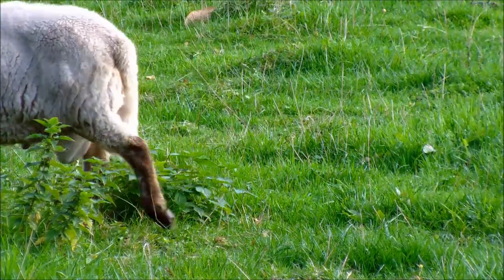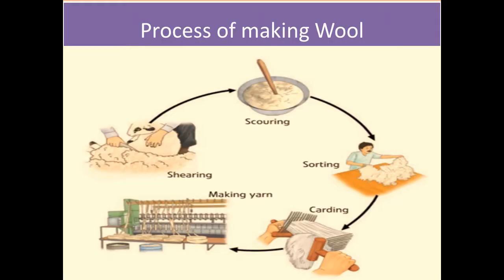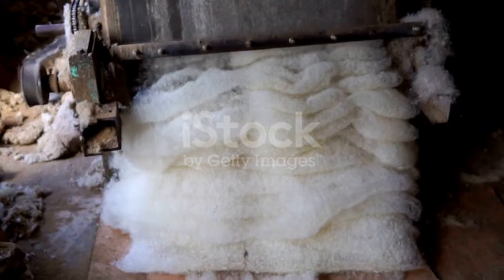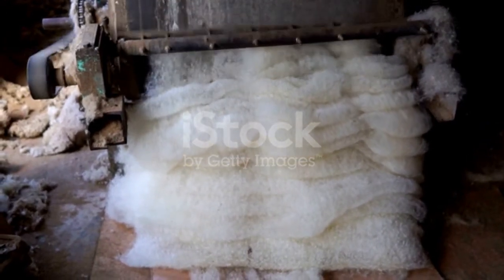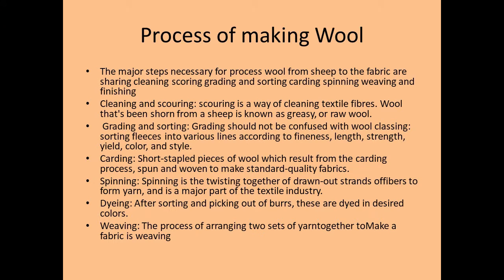For making woolen fabrics, the first process is shearing. The major steps for processing wool from sheep to fabric are: cleaning and scouring — scouring is a way of cleaning textile fibers; wool sheared from the sheep is known as greasy or raw wool. Next is grading and sorting — sorting fleece into various lines according to fineness, length, strength, yield, color, and style.